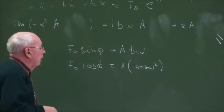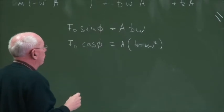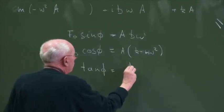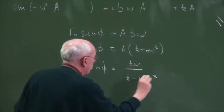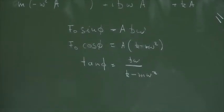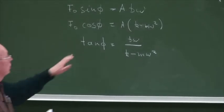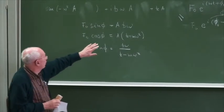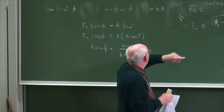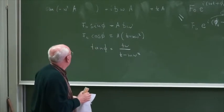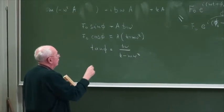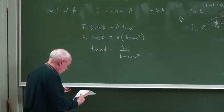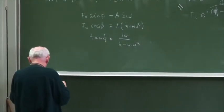Now we know how to calculate φ, and we can also calculate A. We take A equals F zero divided by (b·ω) times sine φ. To find sine φ from the tangent, we use the identity: if tangent is b·ω over (k − mω²), then sine φ equals b·ω over the square root of (k − mω²)² plus (b·ω)².